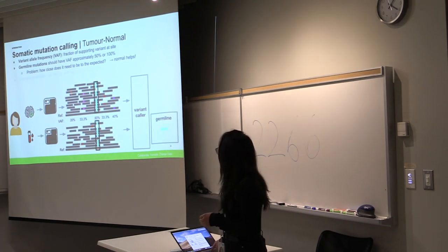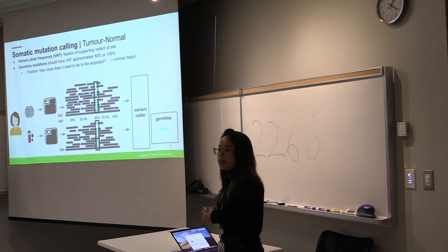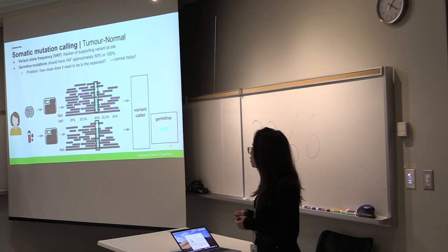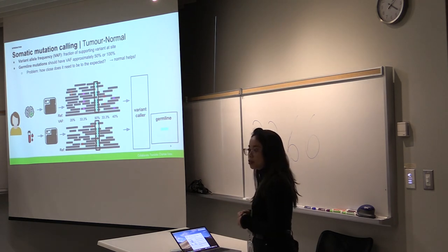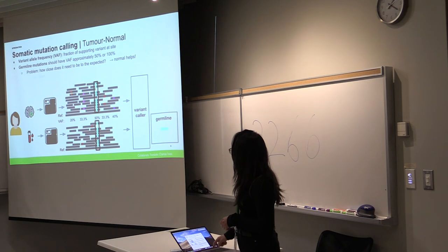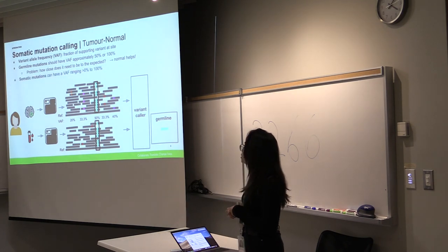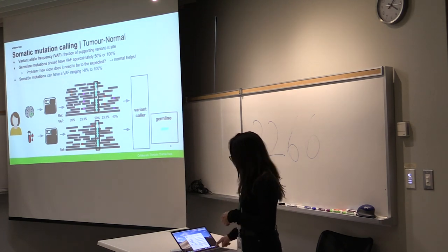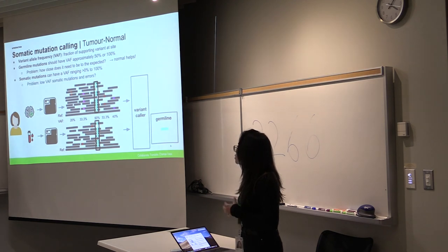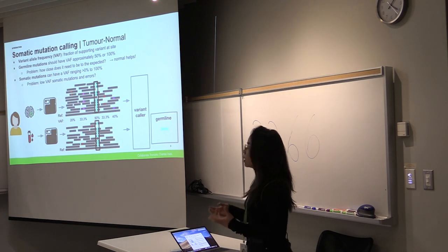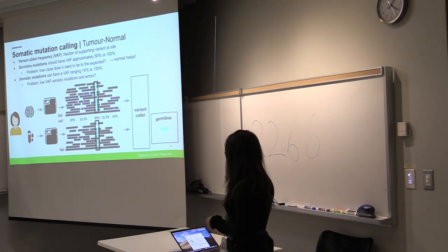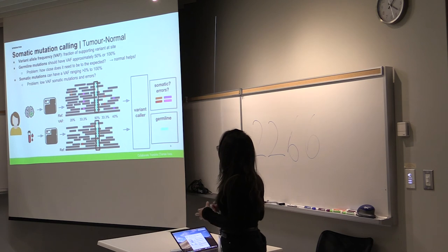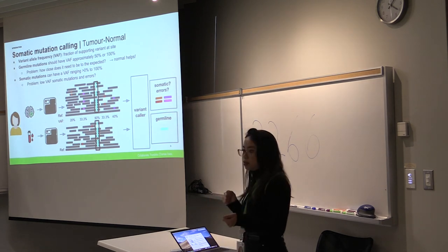In a tumor normal mode the normal sample helps and the idea behind using a normal is trying to see if the variants appear in the normal sample and if that does then it's most likely a germline mutation. On the other hand somatic mutations can range in the variant allele frequency but the problem is that some somatic mutations can appear in very low frequency and that looks like a sequencing error and so the challenge is trying to also identify between somatic mutations and errors.